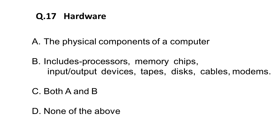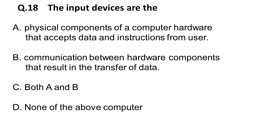Next question: hardware is a physical component of a computer. It includes processors, memory chips, input/output devices, tapes, disks, cables, and modems. It includes both A and B, so the correct answer is option C — it includes both A and B.